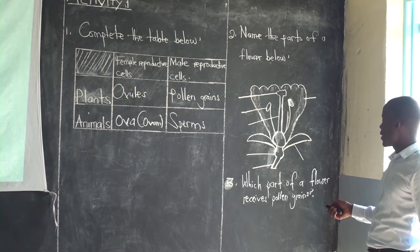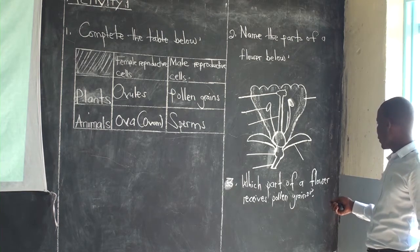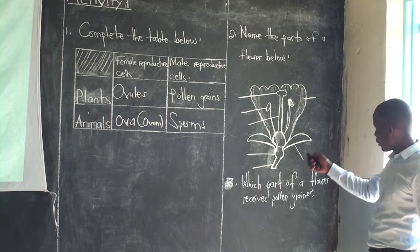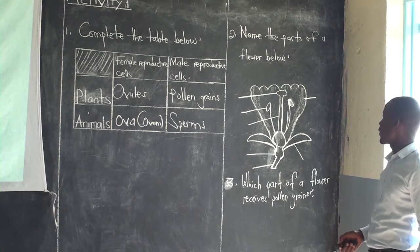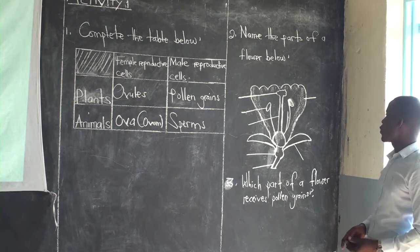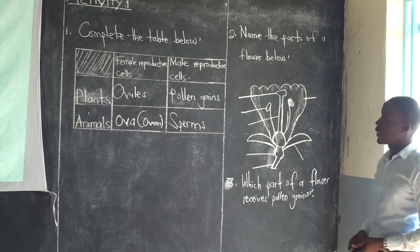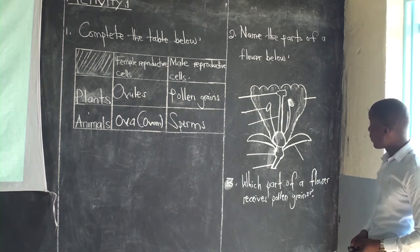You are also asked number three: which part of a flower receives pollen grains? From what we've discussed, you can be able to answer this. As we move ahead, we shall look at the parts of a flower — majorly the middle part of a flower.